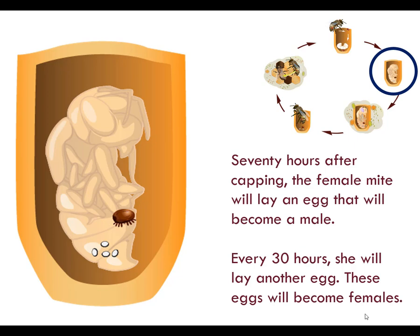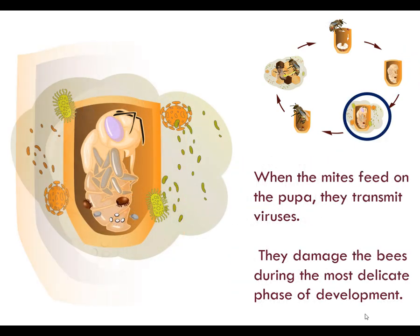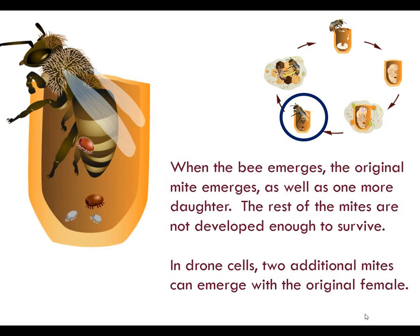The male offspring and female offspring mate. When the mites feed on the pupa, they transmit viruses. They damage the bees during the most delicate phase of development. When the bee emerges, the original mite emerges as well as one more daughter. The rest of the mites are not developed enough to survive.